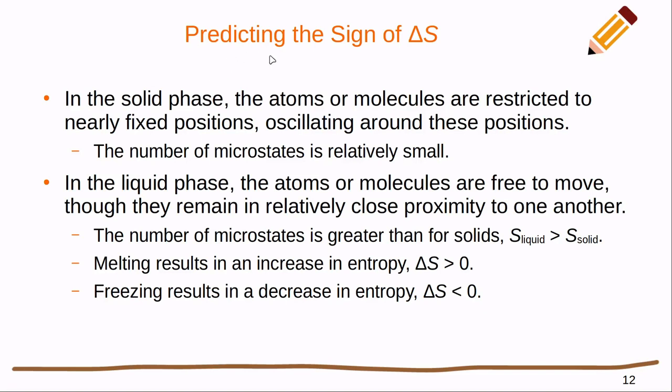Let's see if there's anything that we can do to predict the sign of delta S for a specific process. The first thing we're going to talk about is phase changes. It might not surprise you to think that a solid, where we know that the atoms are restricted to nearly fixed positions, is going to have a relatively small number of microstates. There's not a lot of movement that can happen to create new microstates. This means that the entropy of a solid phase is going to be relatively small.